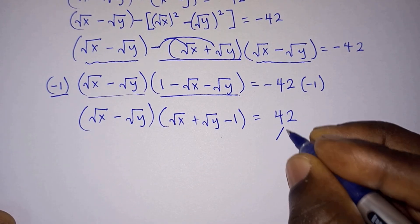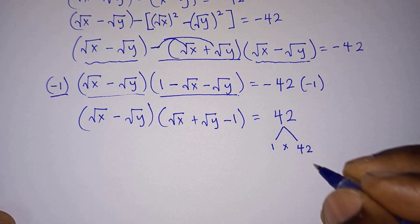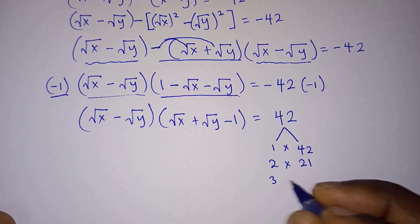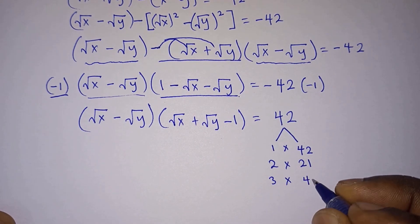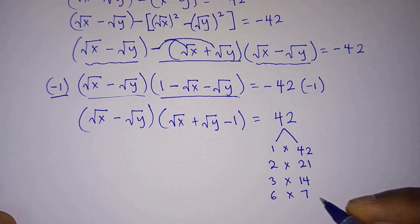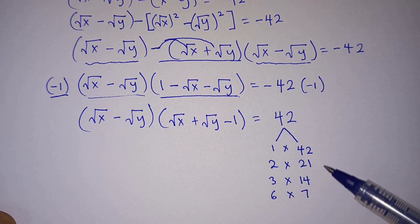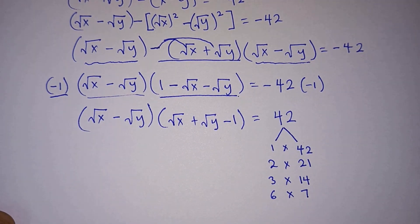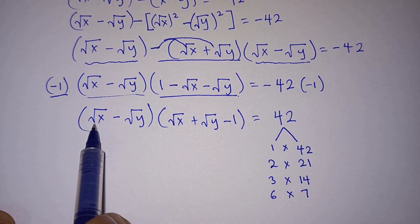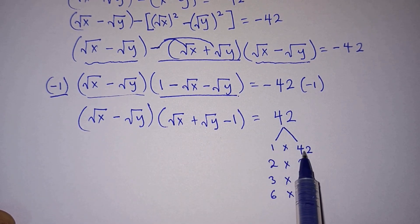Now, 42 can be factored as: 1 × 42, 2 × 21, 3 × 14, or 6 × 7. Since x and y are positive integers, we only consider positive factor pairs. This means (√x − √y) equals one of these factors, and (√x + √y − 1) equals the corresponding factor.